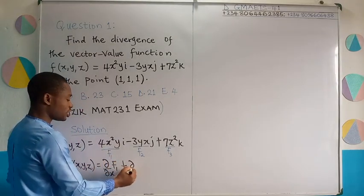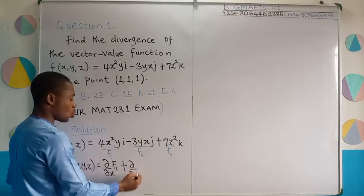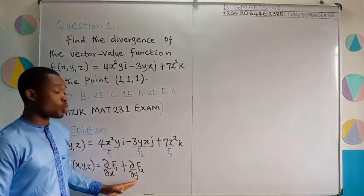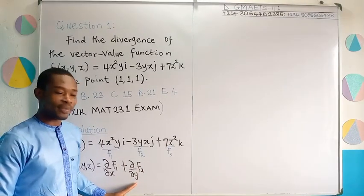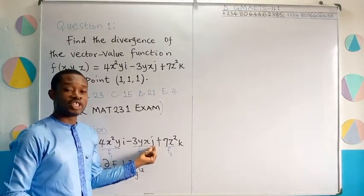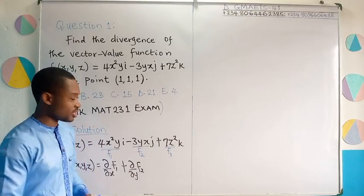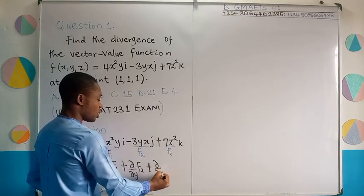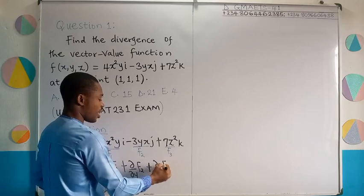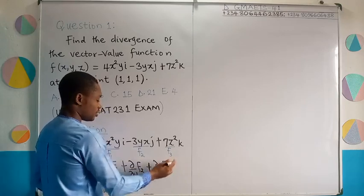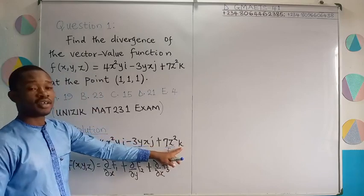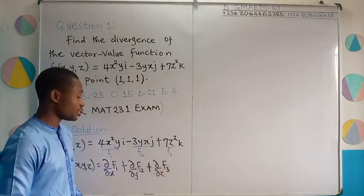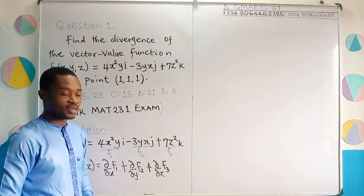Then add it to partial derivative this time around with respect to y of f2 component. Why are we taking the partial derivative with respect to y this time around? Simply because the unit vector j defines y axis for us. And then finally in the same way we have partial derivative with respect to z of f3 which is the third component. You can see k there telling us that this would be partially differentiated with respect to z because k defines z axis.